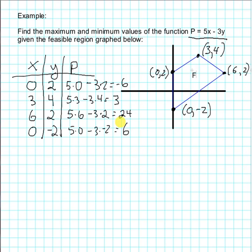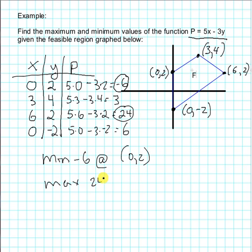Now we can compare our P values and find the max and min. And here we see we have a minimum and the maximum. So for our function, we have the minimum is -6 at the point (0,2), and maximum is 24 at (6,2).